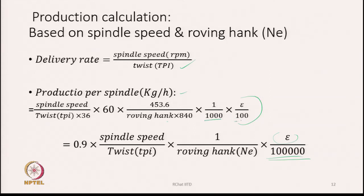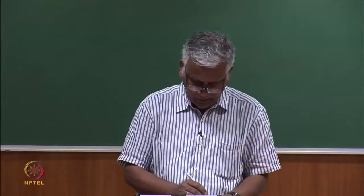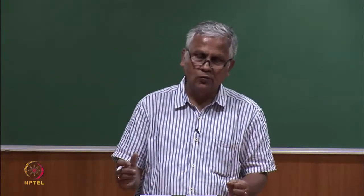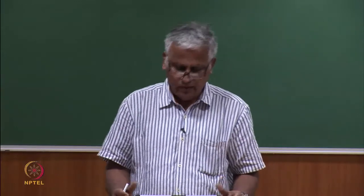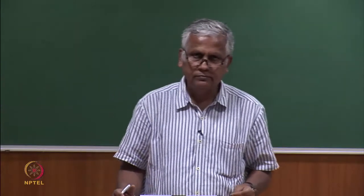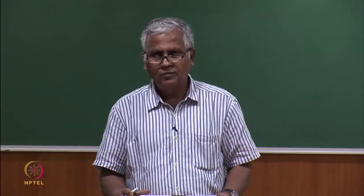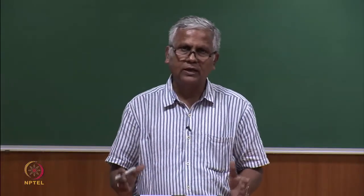To use this formula, we need: spindle speed (same as flyer speed), twist in the roving, roving hank, and efficiency factor — four parameters to find expected production. For actual production, we weigh the bobbins, subtract the weight of n bare bobbins from the total weight of n full bobbins. As an example: spindle speed 1100 rpm, roving twist 1.25 TPI, roving hank 0.95 NE, efficiency 80%. For 8 hours, delivery = 1100/1.25 × 36 × 8 = 11,733 yards, giving production of 5.33 kg per 8 hours per spindle.